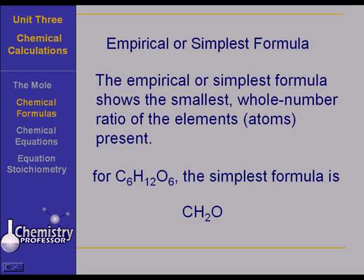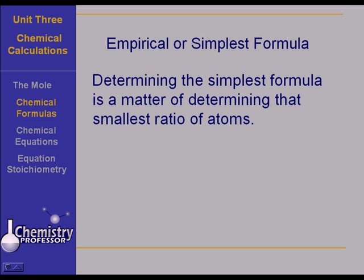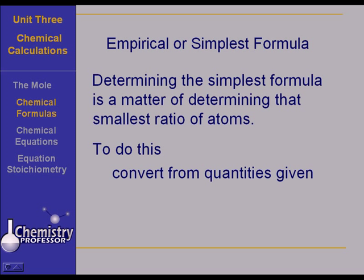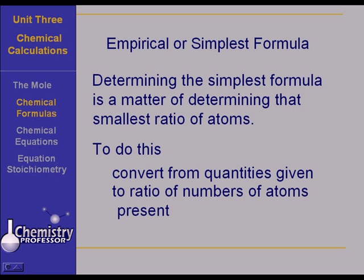But there is a lot of difference between simplest and molecular formulas. Find your simplest formula first. Determining that simplest formula is simply a matter of finding the smallest ratio of atoms. To do this, you convert from the quantities that you were given to the ratio of the number of atoms present. It is strictly a matter of remembering to get to moles first, because moles is a way of expressing the number of atoms that you have.